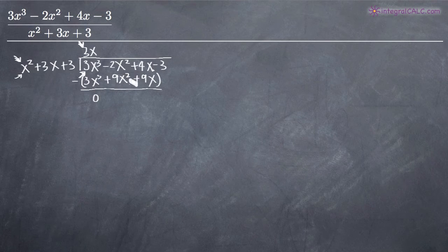We get -2x², and this becomes -9x² because of the negative sign. So -2x² - 9x² equals -11x². Then we have 4x - 9x, which gives us -5x.